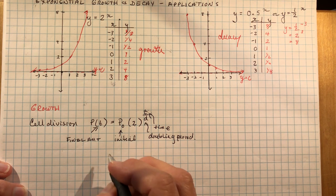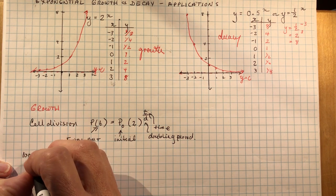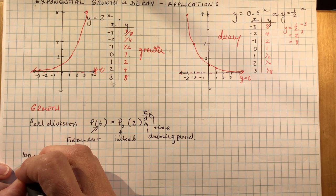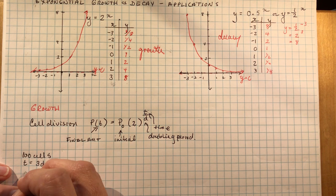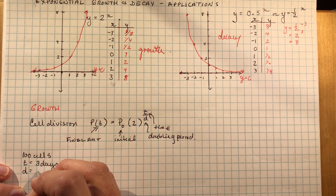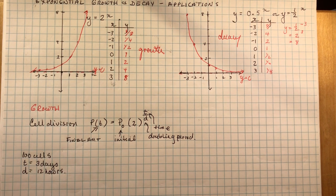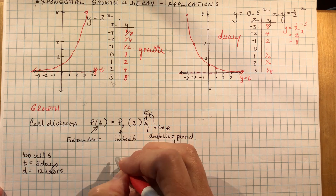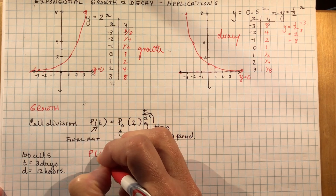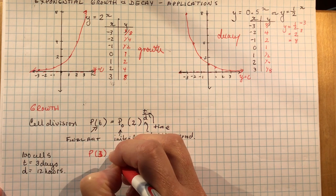Let's do an example. Let's say I have, I'm starting with a hundred cells. The time that went by is three days. And the doubling period is 12 hours. Now, you have to be careful when you're working with questions, any word problem questions to make sure that you're working with the right units. So that means that the amount that I have at some time t, and this time my t is going to be three days.